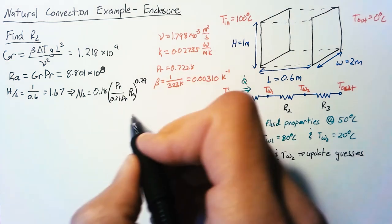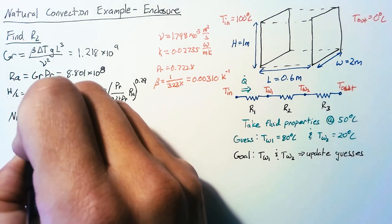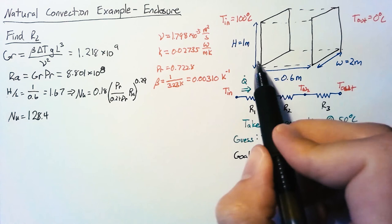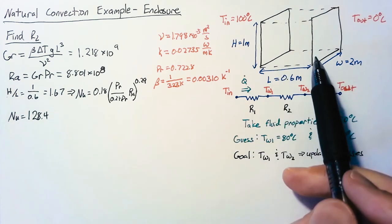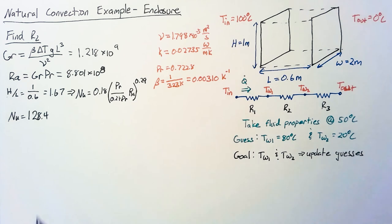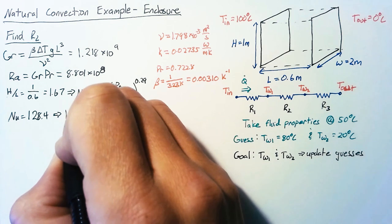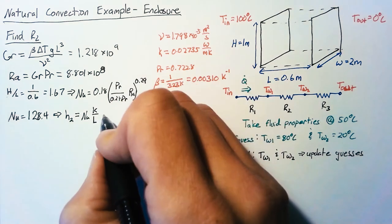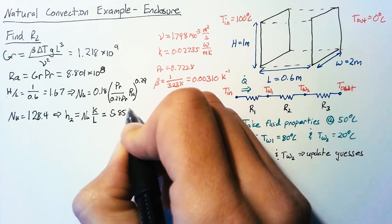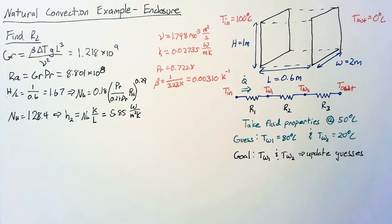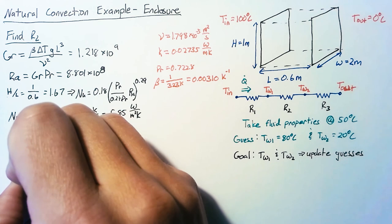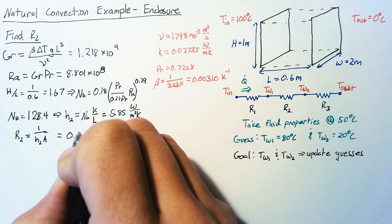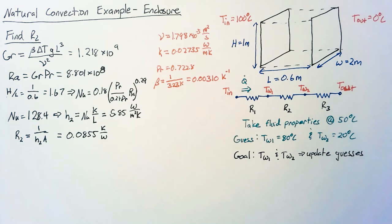So using this equation we can plug in our values and we get that the Nusselt number is 128.4. So for this large enclosure the heat transfer rate is 128 times what it would be for still air. That makes sense because there's a lot of room for the air to move around in there. Using the Nusselt number we can go ahead and calculate our heat transfer coefficient which is just Nusselt number times k divided by L and that's going to be equal to 5.85 watts per meter squared Kelvin. Finally we can get to our R2 value by taking 1 over h2a and that ends up being 0.0855 Kelvin per watt.